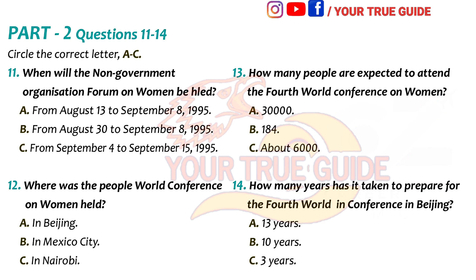Why is the UN holding these meetings? The UN has noticed that discrimination against women has been increasing. The UN definition of discrimination: any distinction, exclusion or restriction made on the basis of sex, which has the purpose of deciding or not allowing the full recognition of a woman on the basis of equality between male and female.